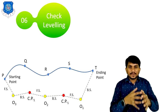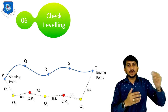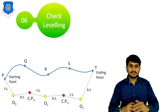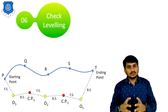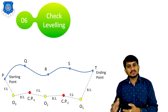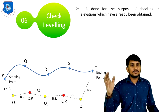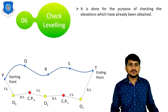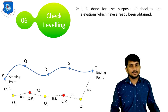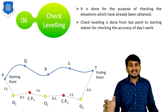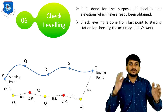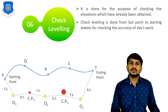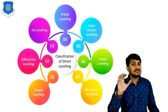This is how we transfer the level from the ending point to the starting point with fewer readings. Check leveling is also one type of differential leveling done for the purpose of checking the elevations already calculated. It is done from the last point to the starting point for checking the accuracy of the day's work.